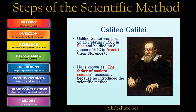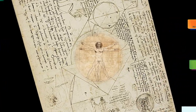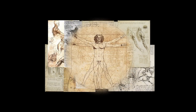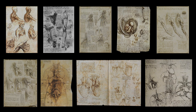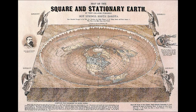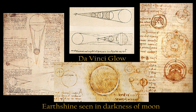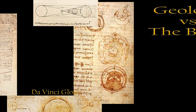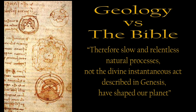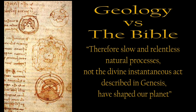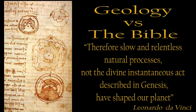Da Vinci was using scientific method a hundred years before Galileo was thought to have created it. Even though Leonardo found many walls in his quest for knowledge, he didn't let anything stop his curious mind — even if performing autopsies to understand the human body was looked down upon by the church. It was commonly believed the world was flat at the time, yet Leonardo's notes are full of planetary bodies. With his backward writing, it is possible he was hiding heretical views, like his view on geology. After discovering seashells in the mountains, he began to question the church's timeline, writing that slow and relentless natural processes — not the divine instantaneous act described in Genesis — have helped shape our planet.